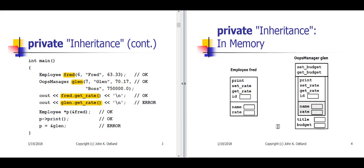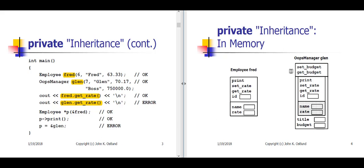If we take a look at our diagram on slide four, I use a horizontal line in my class diagram to indicate the separation between the public facilities on top and the private facilities underneath. The public stuff is what can be accessed from within main or any other part of the code using employee objects; the private stuff can only be accessed and modified by the member functions of the class. But over here for Glenn, the oopsManager, the only things that are public are the two functions setbudget and getbudget — everything else, including public members for the employee class like print, setrate, and getrate, are now private if accessed through Glenn.